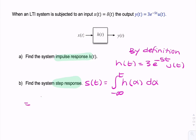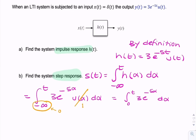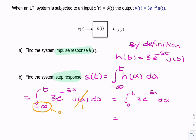So we simply integrate from minus infinity to T of 3e^{-5α} u(α) dα. We don't worry about the unit step because it just changes the lower limit of integration to 0. So what we're actually integrating is 3e^{-5α} dα from 0 to T. That's a straightforward integral, and we can write the answer as (3/5)(1 - e^{-5T}).